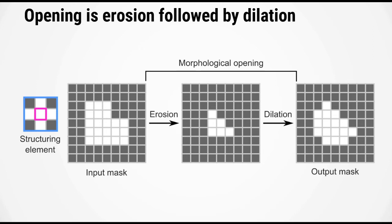Let's start by looking at the opening operation. Now opening is simply erosion followed by dilation. In this example on the screen we have our input mask on the left and we're going to use this cross-shaped structuring element to carry out the opening.